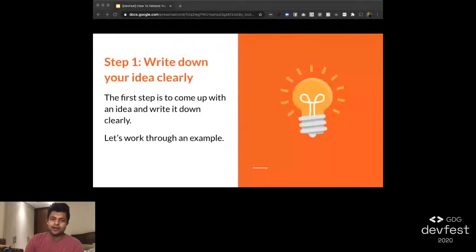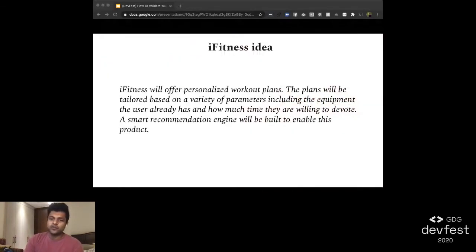Let's get started. The first step is to write down your idea clearly. Let me go through an actual example that popped in my mind during the beginning of this pandemic. I'm used to going to work out at the gym three times a week. Now, with no access to a gym, I started looking at YouTube for workout videos. I found that most of them were cardio-based, but I actually prefer weight training. Also, I tried to find fitness apps on my iPhone device, but none of them were really customized to the equipment I had at home because I had some dumbbells and resistance bands, but the mobile app required me to use other stuff. So I came up with an idea for an app called iFitness. iFitness will offer personalized workout plans tailored to each user's needs. The plans will be tailored based on a variety of parameters, including the equipment the user already has, and how much time they're willing to devote. A smart recommendation engine will be built to enable this product. So that's my idea, and I've written it out clearly.